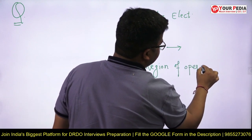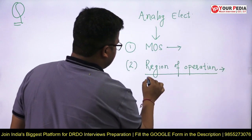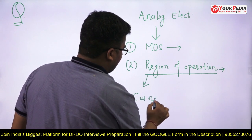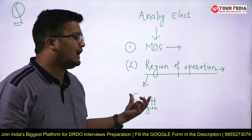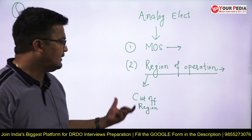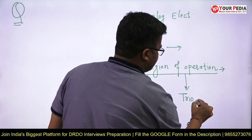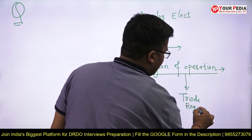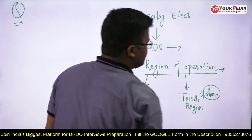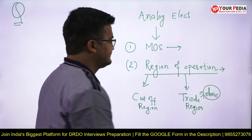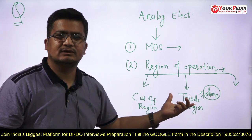How many regions does it operate in? So obviously you will start explaining: sir, it can work in the cutoff region. Be very clear — you must know if your MOS is operating in the cutoff region, what are the applications, and what are the practical applications in analog or digital where this cutoff region is useful. Next, you will say: sir, we can also say triode region, and a sub-part of this is the ohmic region — for very small values of V_DS, voltage and current are directly proportional, satisfying Ohm's law.